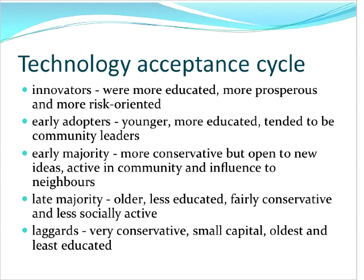So, the technology acceptance cycle. Here are some of the types of people and how they view technology. Innovators are more educated and more risk-oriented. Early adopters tend to be younger, more educated community leaders. Early majority are more conservative but open to new ideas, and active in the community influencing neighbors. Late majority are older, less educated, fairly conservative, and less socially active. And laggards are very conservative, usually older and less educated. What kind of technology adopter would you say you are?